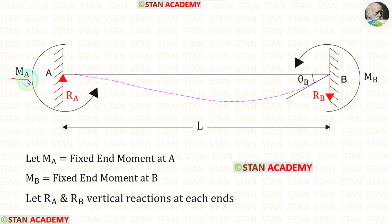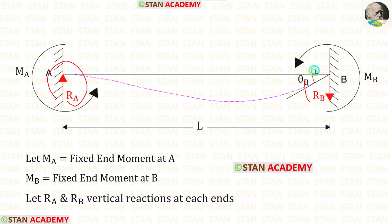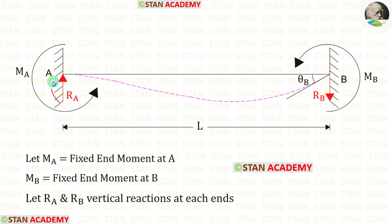Let us keep MA as the fixed end moment at point A, assumed to be acting in the anti-clockwise direction. Let us keep MB as the fixed end moment at point B, also assumed acting in the anti-clockwise direction, since there is no load in this beam. Let us keep RA and RB as the vertical reactions at each end. RA is assumed acting upwards, and RB should be acting downwards because there are no vertical loads.